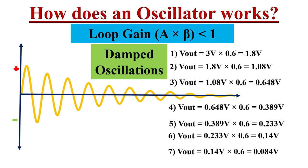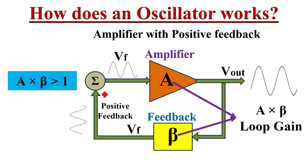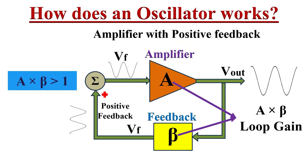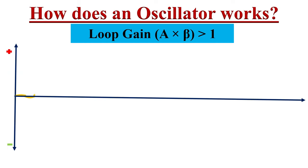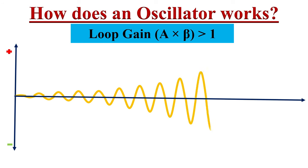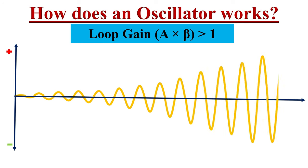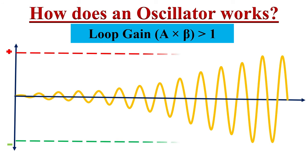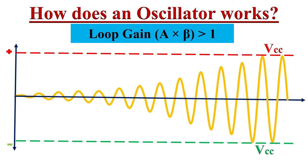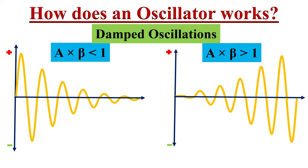These types of oscillations are called damped oscillations. Similarly, whenever A·beta is greater than 1, whenever the input signal passes through the loop, the amplitude of the output signal will increase. Hence the oscillations in the circuit will build up, and after a particular time period they will reach the level of Vcc of the oscillator circuit. So in both cases — whether A·beta is less than 1 or greater than 1 — we are not getting sustained oscillations.